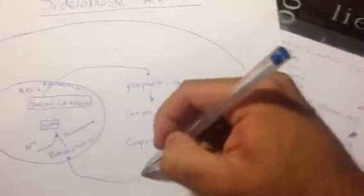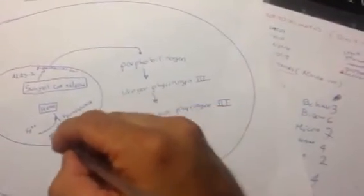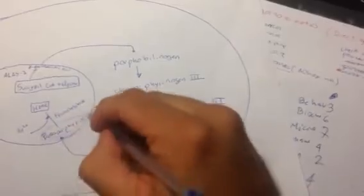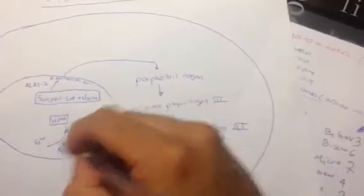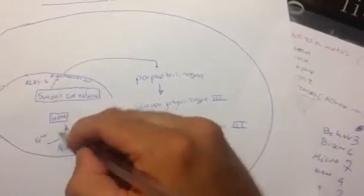That then goes back into the mitochondrion catalyzed by another enzyme, and that forms protoporphyrin. Protoporphyrin to heme is the last step in heme synthesis, and the way it goes is that protoporphyrin is combined with iron to make heme by the enzyme ferrochelatase.